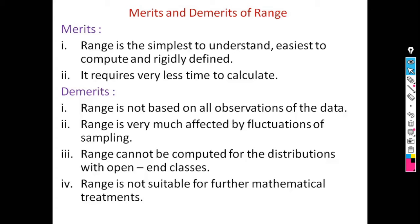Range uses only two extreme observations — the largest and smallest — so any change in the observations in between will not affect the range. This is the main drawback of range. In many situations, extreme observations are widely separated from the remaining observations, and therefore range fails to give the true picture of dispersion.